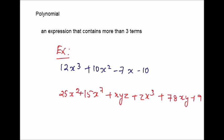The last type of polynomial based on terms is: if the expression contains more than three terms, then the expression is called polynomial. When you get an expression with more than three terms, you can say that it is a polynomial.